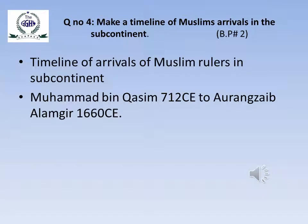Now question number 4: Make a timeline of Muslims' arrival in the subcontinent. To answer this question, open pages 2 and 3 of your book. In your notebook, draw the timeline of the arrival of Muslim rulers in the subcontinent. The timeline is given in the book. You can decorate and make it neat with the help of colours. The timeline starts from Mohammed bin Qasim and ends with Aurangzeb Alamgir. Go through the timeline to see how different Muslim conquerors ruled with the passage of time. Draw this timeline and revise it thoroughly.